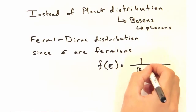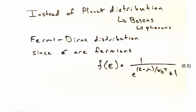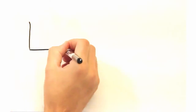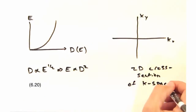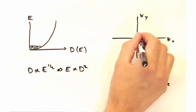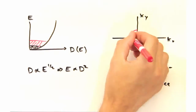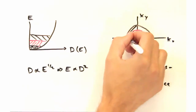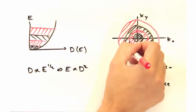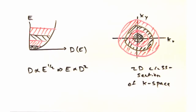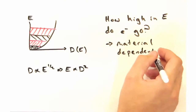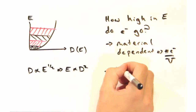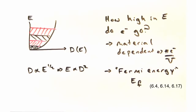And what's nice is that because we're dealing with fermions, to imagine how the states get filled, imagine our density of states is like this massive bucket. When we pour electrons into the system, they'll start by filling in the origin and move out, and no two electrons can occupy the same state. How high in energy do the electrons fill this bucket? It depends on the material, but generally we're going to define whatever that maximum value is as the Fermi energy.